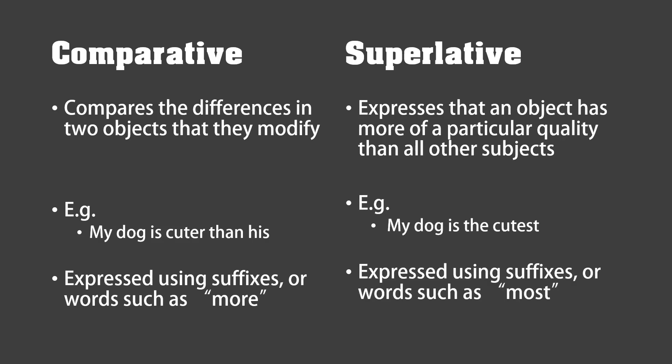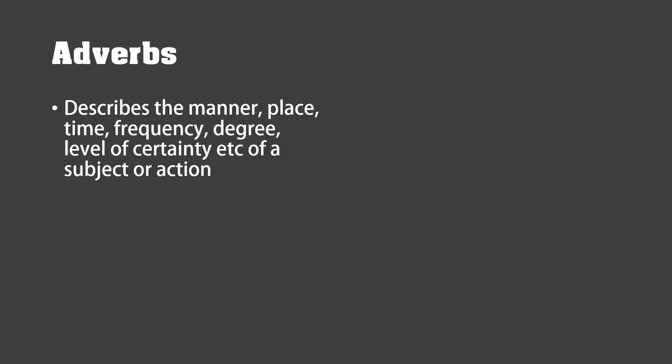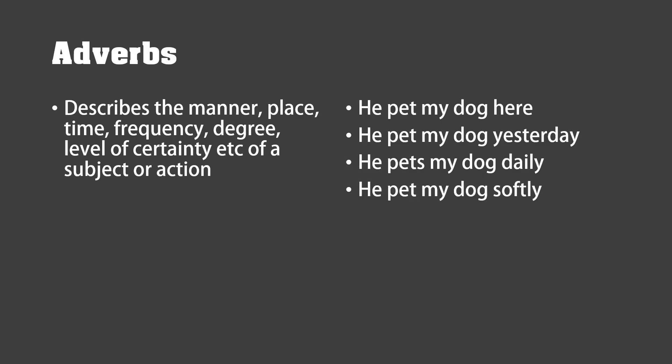Adverbs describe the manner, place, time, frequency, degree, or level of certainty and other things of a subject or an action, such as 'he pet my dog here,' 'he pet my dog yesterday,' 'he pets my dog daily,' 'he pet my dog softly,' and 'he definitely pet my dog.' These are examples of each of the things on the left in order.